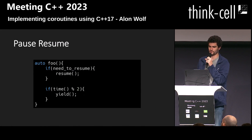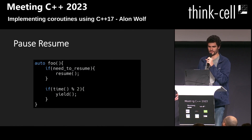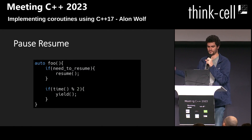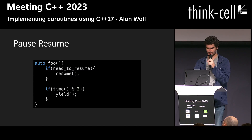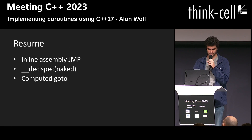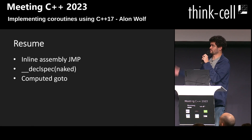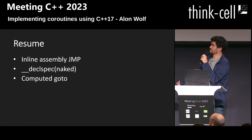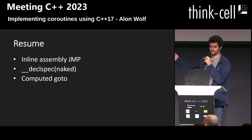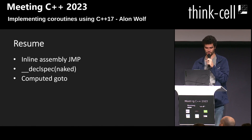If we talk about coroutines, we need two things: a coroutine is a function that we can pause and we can resume. There are many ways to implement resume — here you can see three of them, like inline jump or computed goto.